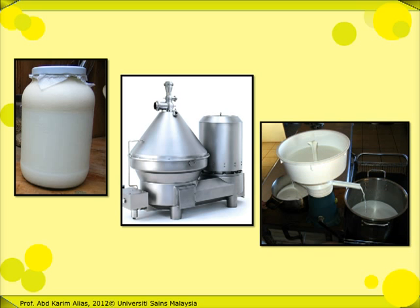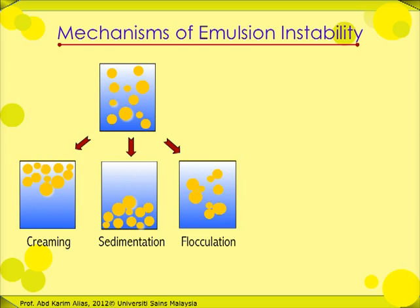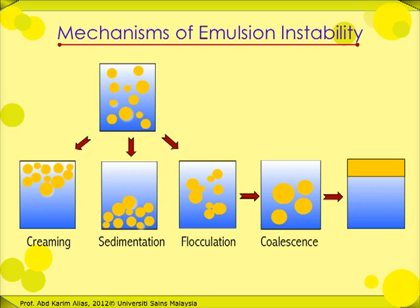Next is flocculation. Flocculation is defined as a process by which two or more droplets aggregate without losing their individual identity. In practical food emulsions, larger droplets — that is, larger than two micrometers — flocculate faster, and flocculation is promoted by creaming. Flocculation occurs when van der Waals attractive forces between droplets exceed the electrostatic repulsive forces. In addition, the rate of flocculation can be affected by the pH and ionic strength of the aqueous environment.